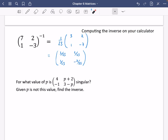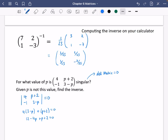It then says, for what value of P is this singular? Given that P is not this value, find the inverse. So remember, singular means that the determinant of the matrix is going to be equal to 0. So we could say that the determinant of (4, P+2; -1, 3-P) is equal to 0. So it's going to be 4 times this minus this times this. I think we did this question earlier on, actually. So that's got to be equal to 0. Yep, we did do this one earlier on. So it's 12 - 4P + P + 2 = 0. So 14 = 3P, and so P is equal to 14/3. So that is when it is singular, because the determinant is equal to 0.